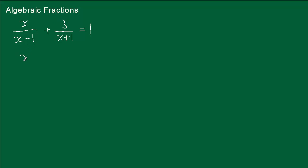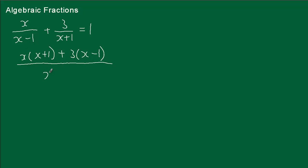So the numerator is going to be x times (x plus 1), plus 3 times (x minus 1). On the bottom we've got the difference of two squares — we square the first term to get x squared, and minus 1 times plus 1 gives minus 1. So the denominator is x squared minus 1, and that equals 1.